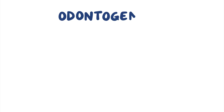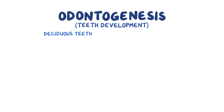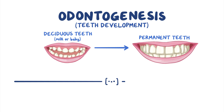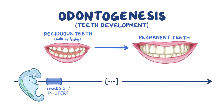Odontogenesis, or teeth development, is a process that includes the development of deciduous teeth — also called milk teeth or baby teeth — and permanent teeth. Deciduous teeth begin to develop during week 6 to 7 of intrauterine life, whereas development of permanent teeth begins during week 14 of intrauterine life and continues up to 5 years after birth.